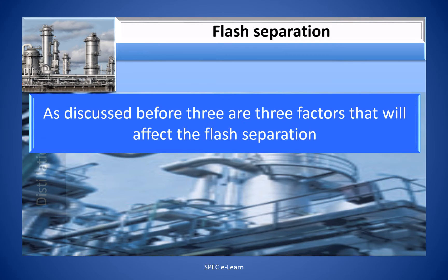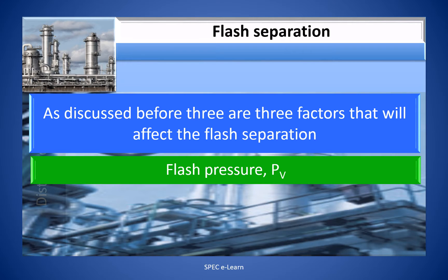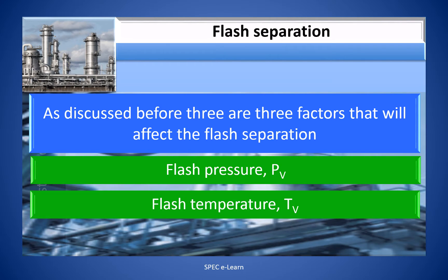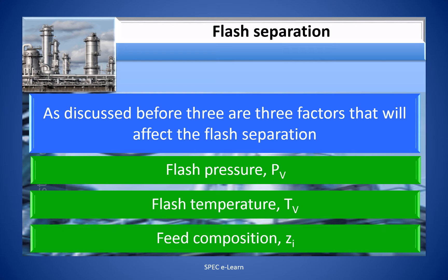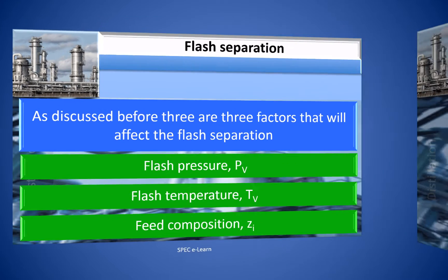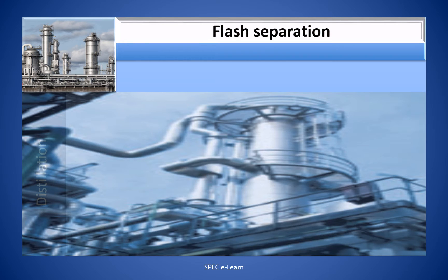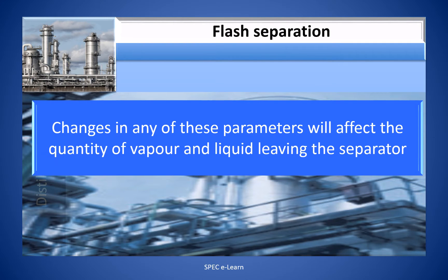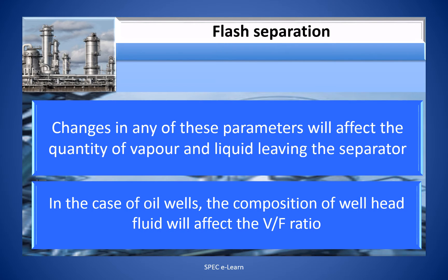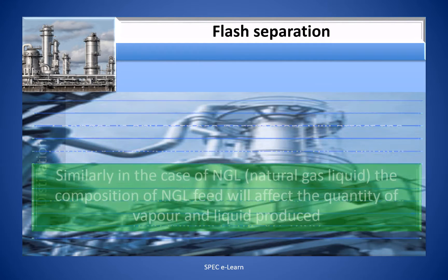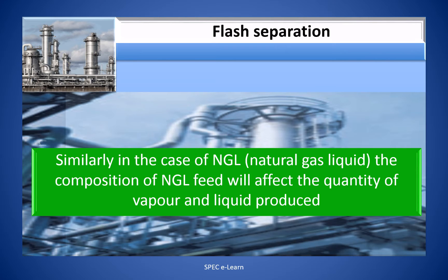As discussed before, there are three factors that will affect the flash operation: the flash pressure P, flash temperature T, and feed composition Z_i. Changes in any of these parameters will affect the quantity of vapor and liquid leaving the separator. In the case of oil wells, the composition of the wellhead fluid will affect the V/F ratio. Similarly, in the case of natural gas liquids (NGL), the composition of the NGL feed will affect the quantity of vapor and liquid produced.